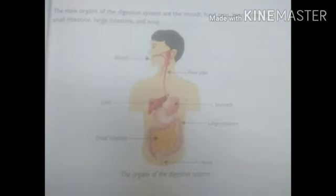Next we can learn the main organs of the digestive system. On page 21 at the top, you can see the main organs of the digestive system are: mouth, food pipe, liver, stomach, small intestine, large intestine, and anus. You can also see the different organs in the digestive system in the picture.